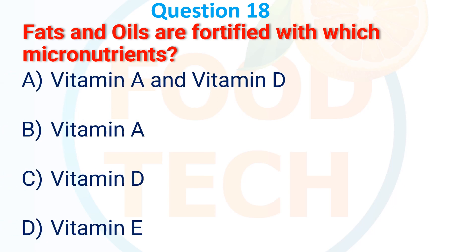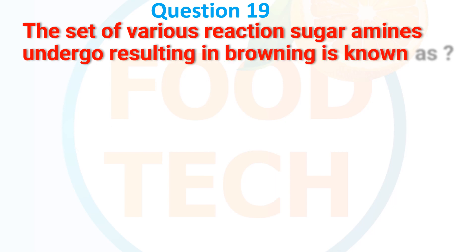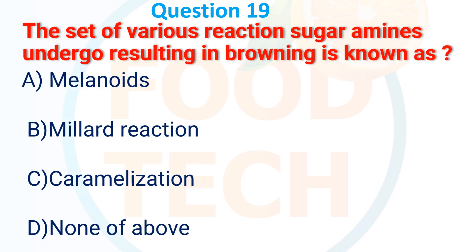Question 16: Fat and oil are fortified with which micronutrients? A. Vitamin A and Vitamin D, B. Vitamin A, C. Vitamin D, D. Vitamin E. The answer is A. Vitamin A and Vitamin D.